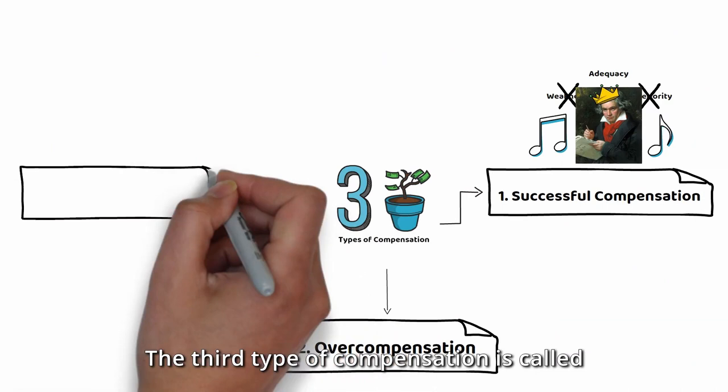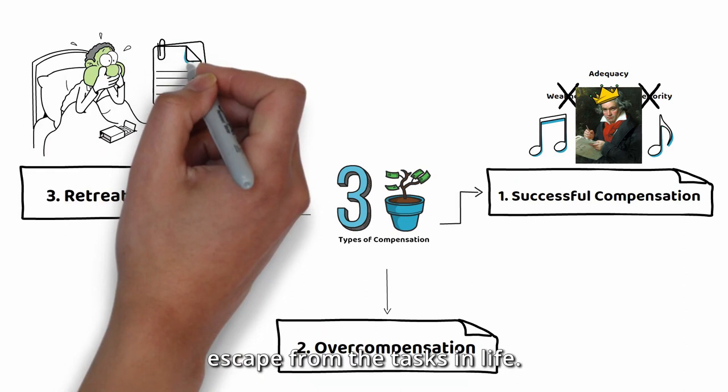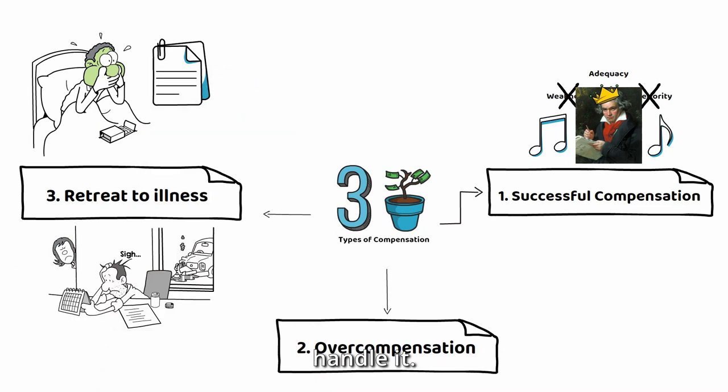The third type of compensation is called retreat to illness. These people use illness as an excuse to escape from the tasks in life. These people don't want to face the real world because they think they can't handle it.